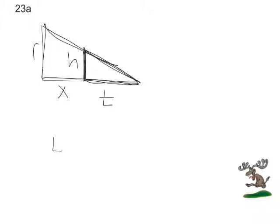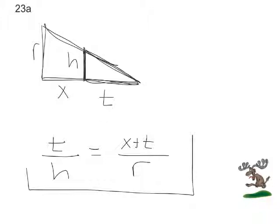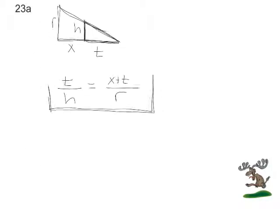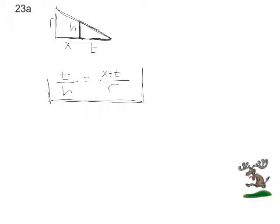So the base to the height of the small triangle is equal to the base to the height of the larger triangle. There's the equation that we can conclude from the diagram, and then from there what we want to do is solve that for x. So let's multiply the R across, RT over H equals x plus t, and finally RT over H minus t is equal to x.